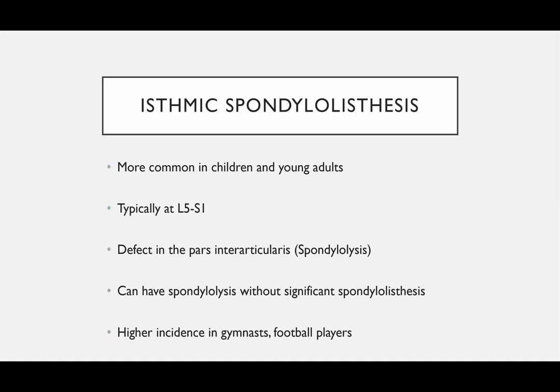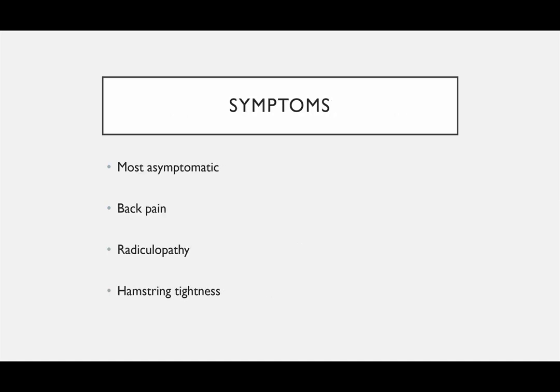Isthmic spondylolisthesis is most common in children and young adults. You get a so-called defect — sometimes just called a stress fracture — in the pars interarticularis. You can have spondylolysis without spondylolisthesis, or it can go on to develop into spondylolisthesis. This is seen more in gymnasts and football players due to hyperextension activities.